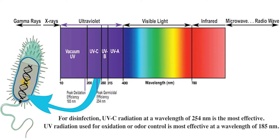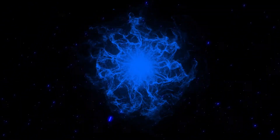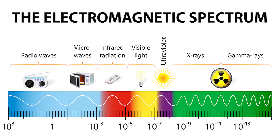Ultraviolet radiation can be found on the light spectrum and comes in various strengths or wavelengths, some of which can be harmful to human skin and eyes. All radiation is a form of energy, which is usually invisible to the human eye. UV radiation is just one form of radiation and is measured on the electromagnetic spectrum.